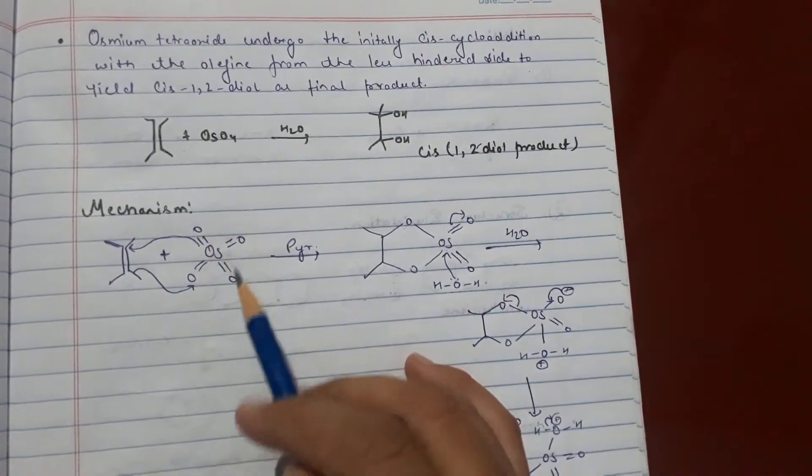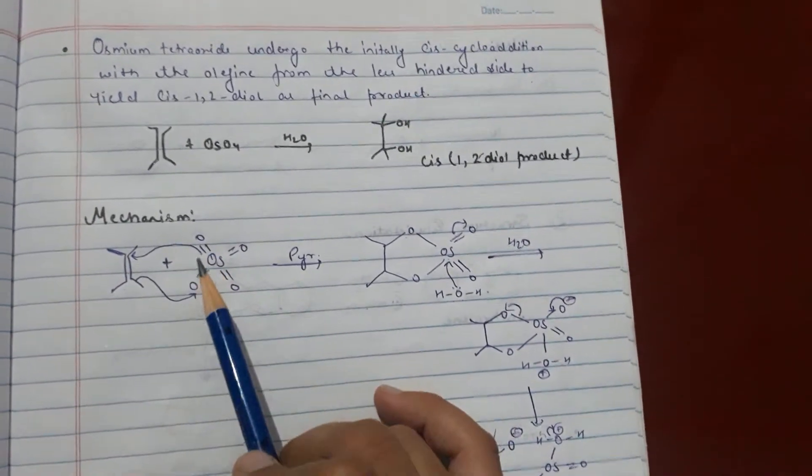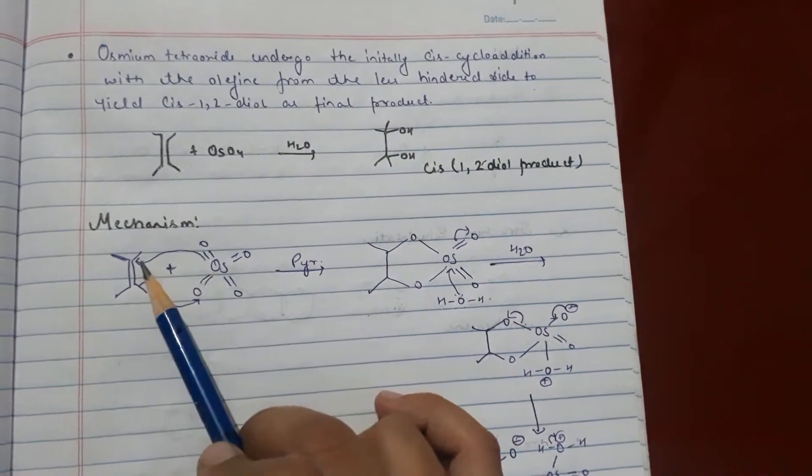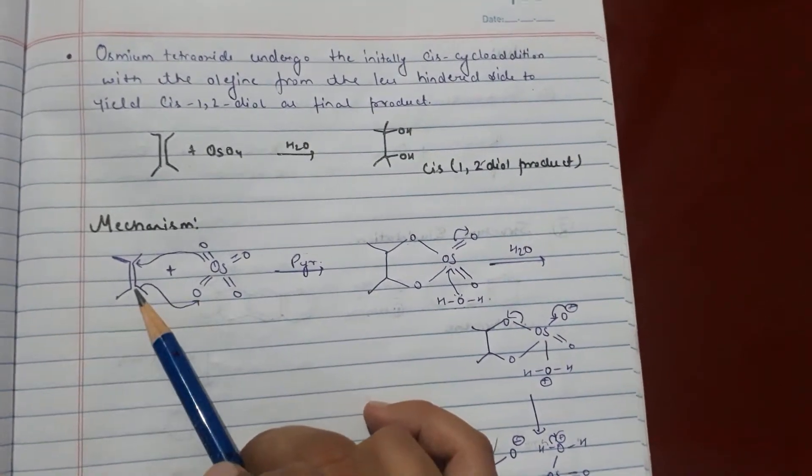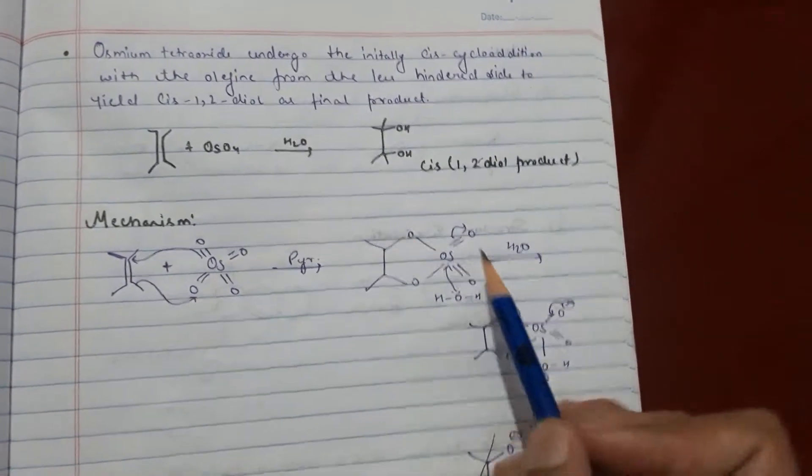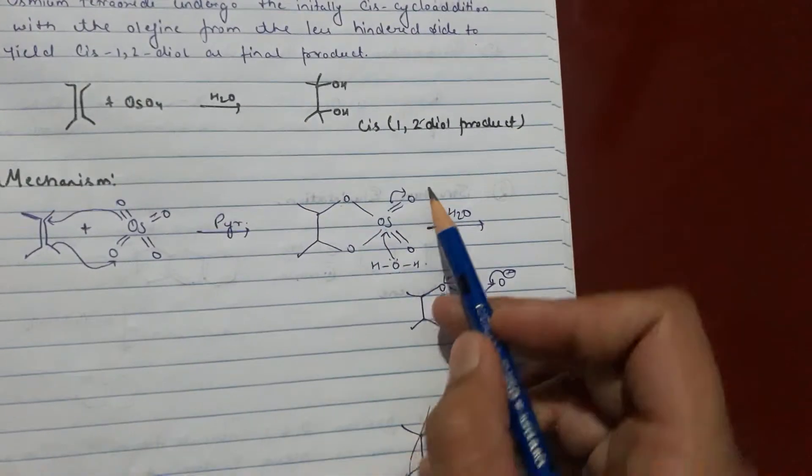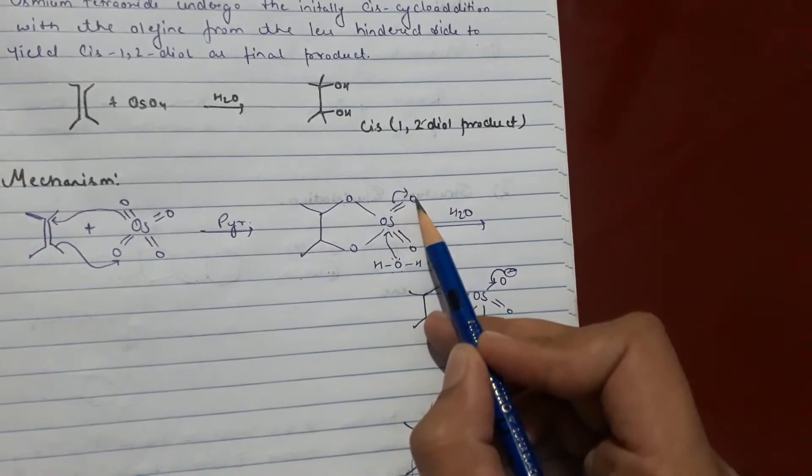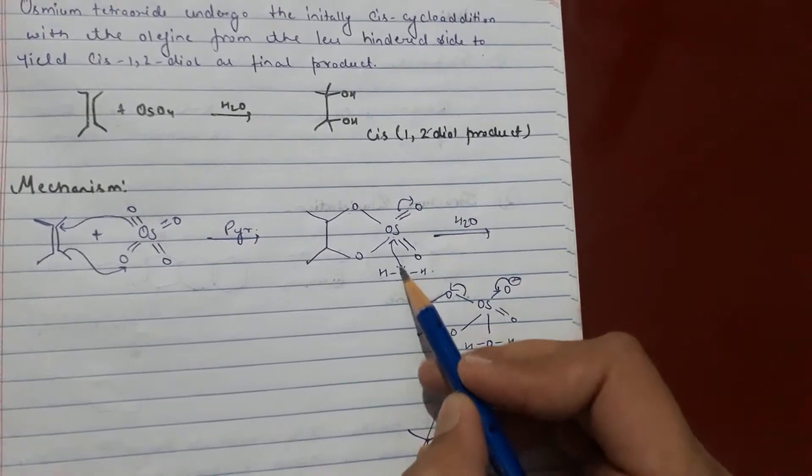Osmium double bond with 4 oxygen atoms. Now this will shift here. This oxygen will shift here and this oxygen may bond with this one. Now this bond will shift here. This bond will shift on that oxygen atom in presence of H2O.